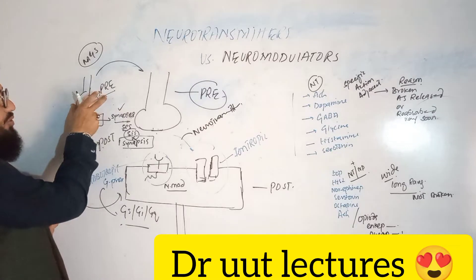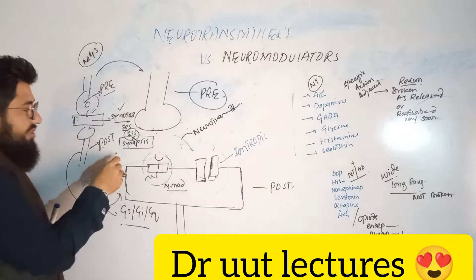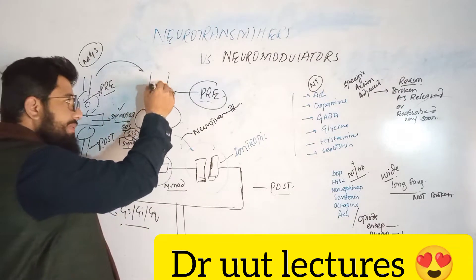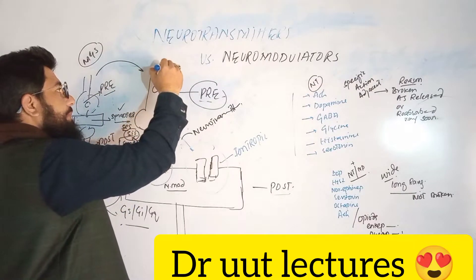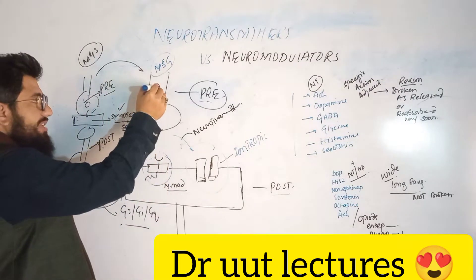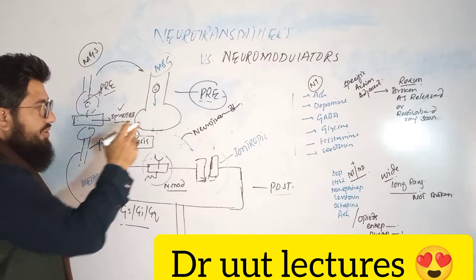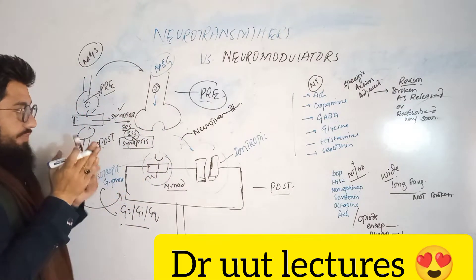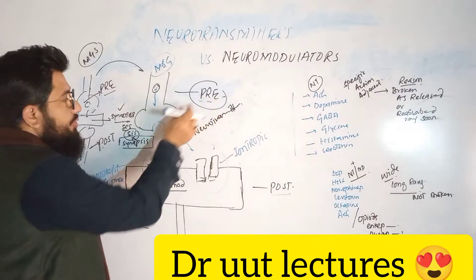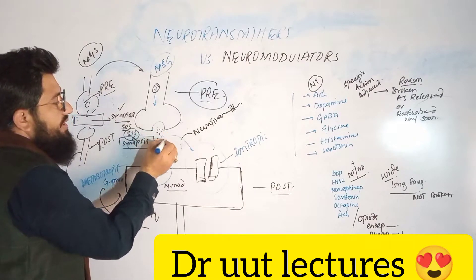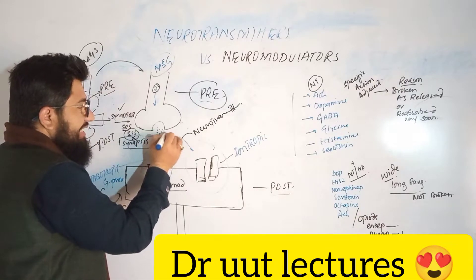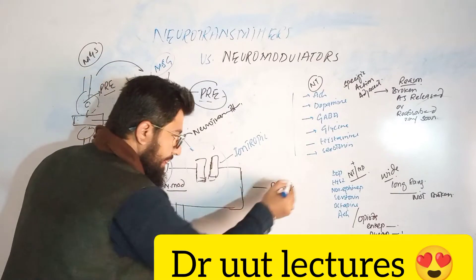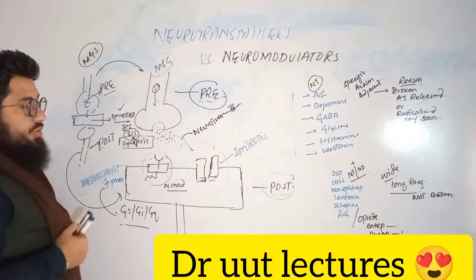Looking at a more magnified view: here we have the presynaptic neuron and the postsynaptic neuron. A message is generated and a chemical is synthesized in the presynaptic neuron. That chemical gradually moves toward the endpoint of the neuron. The chemicals are stored in vesicles, which fuse with the presynaptic neuron membrane and the chemicals are then released. Now, these released chemicals travel toward certain receptors on the postsynaptic neuron.